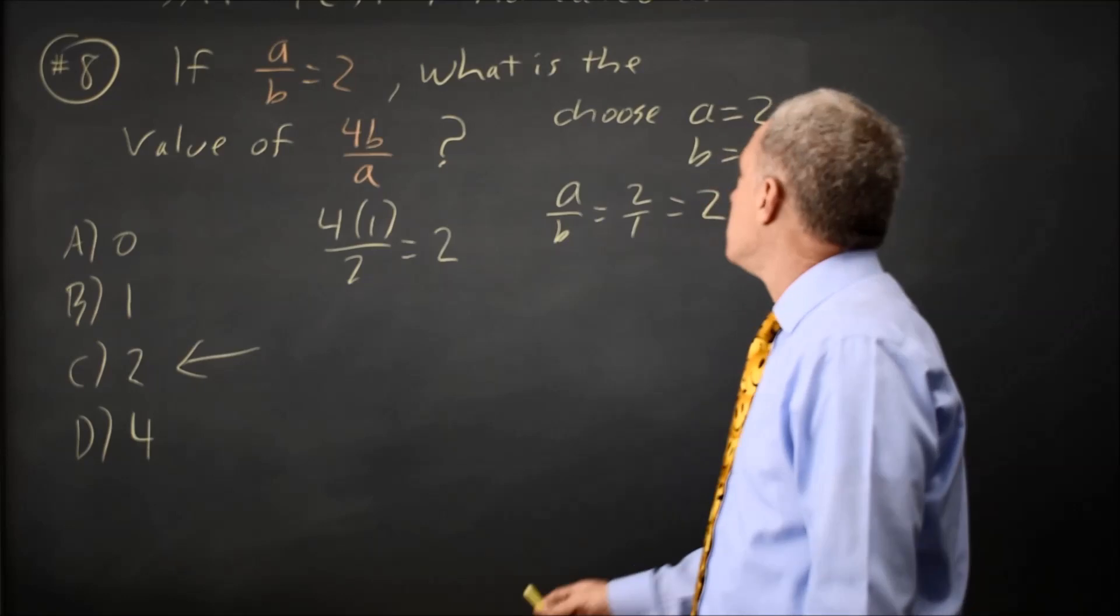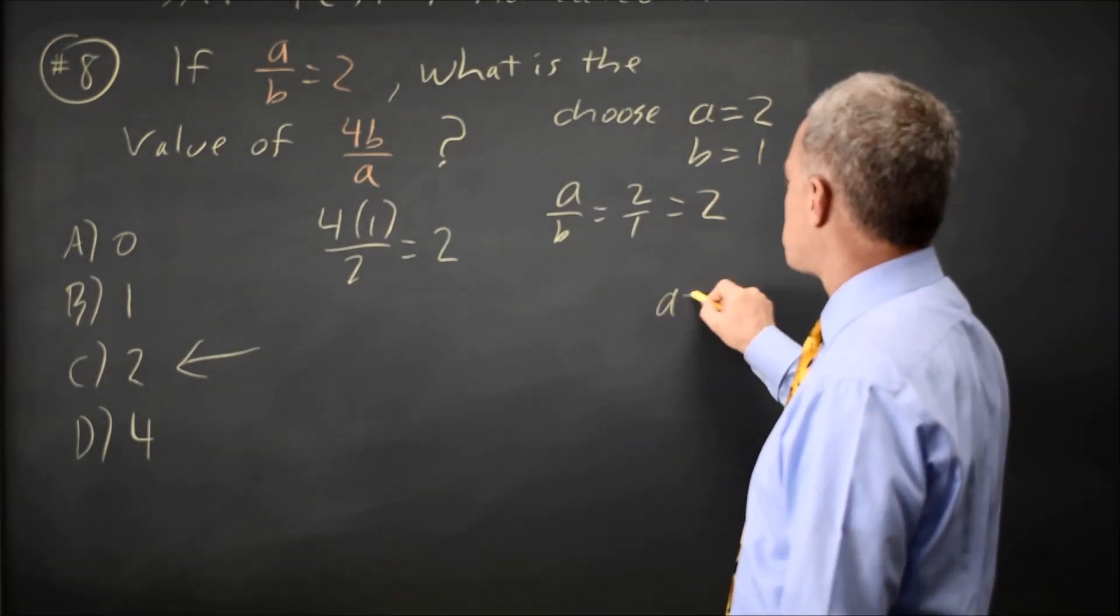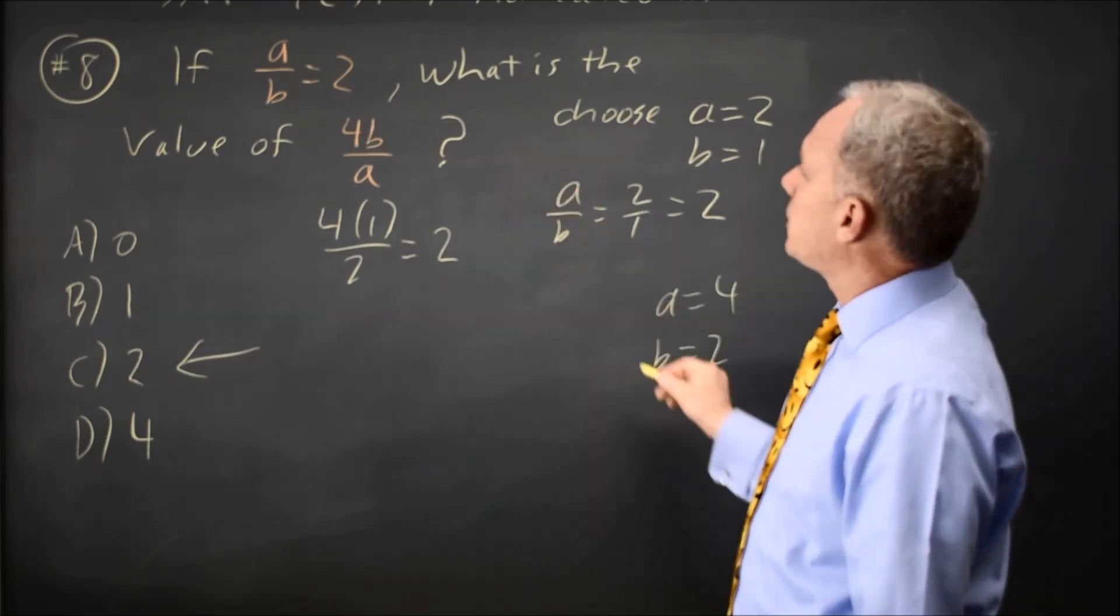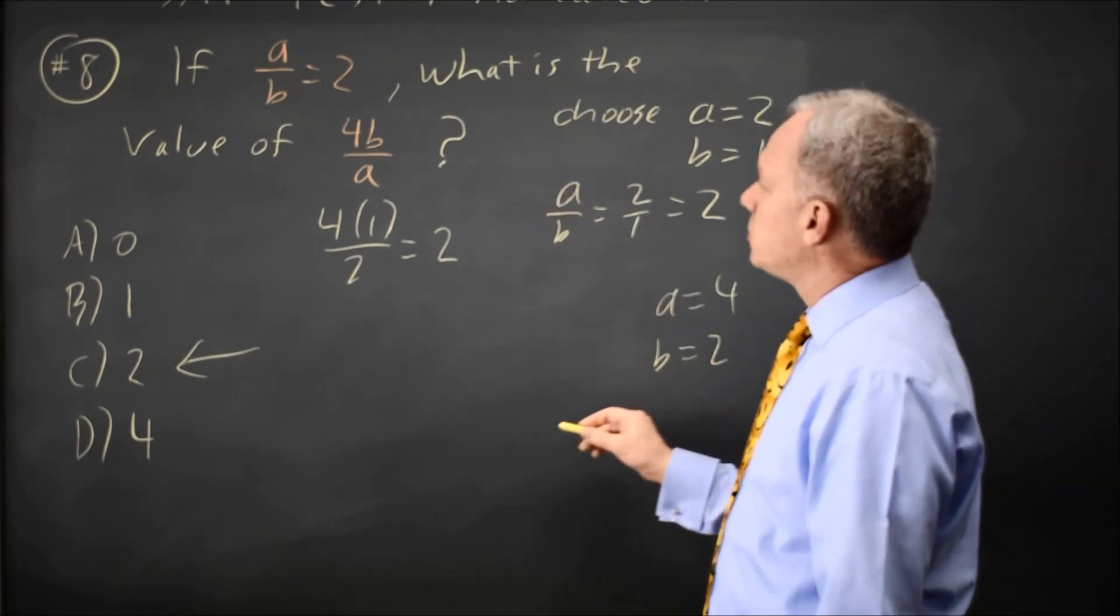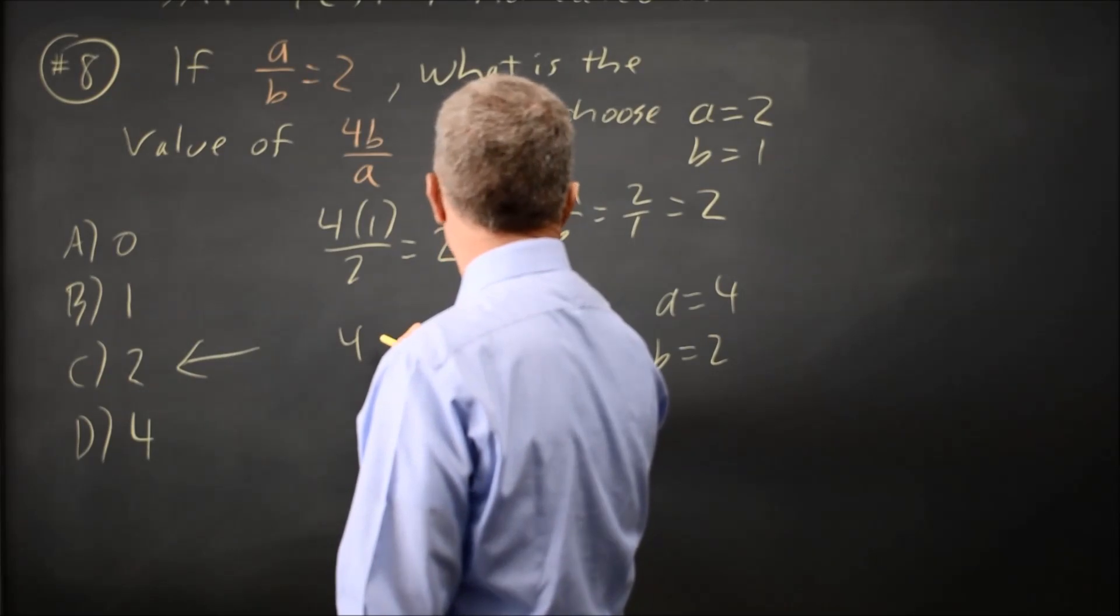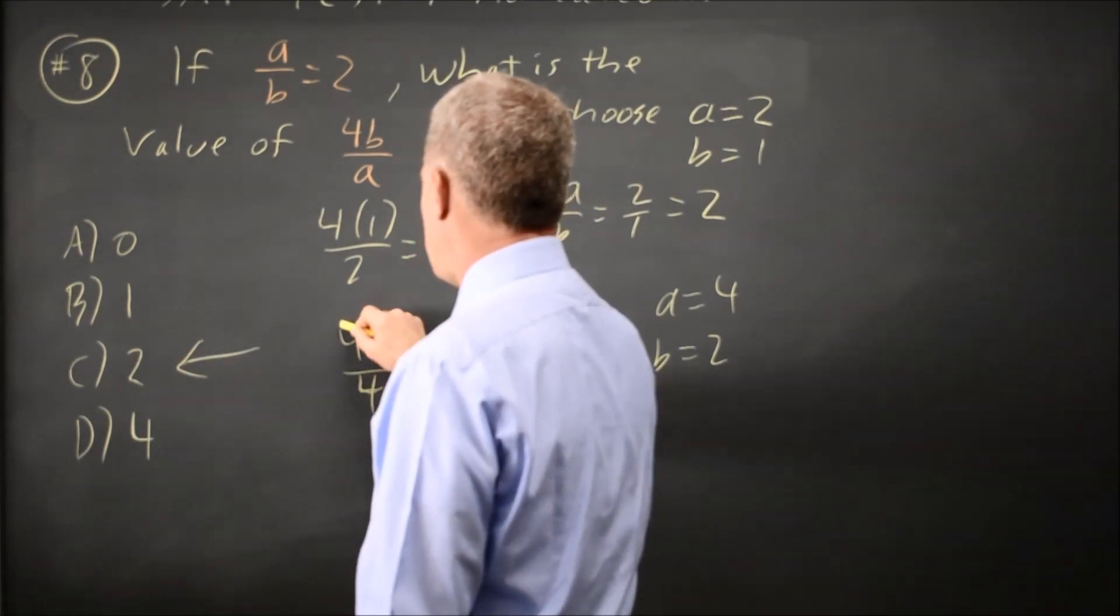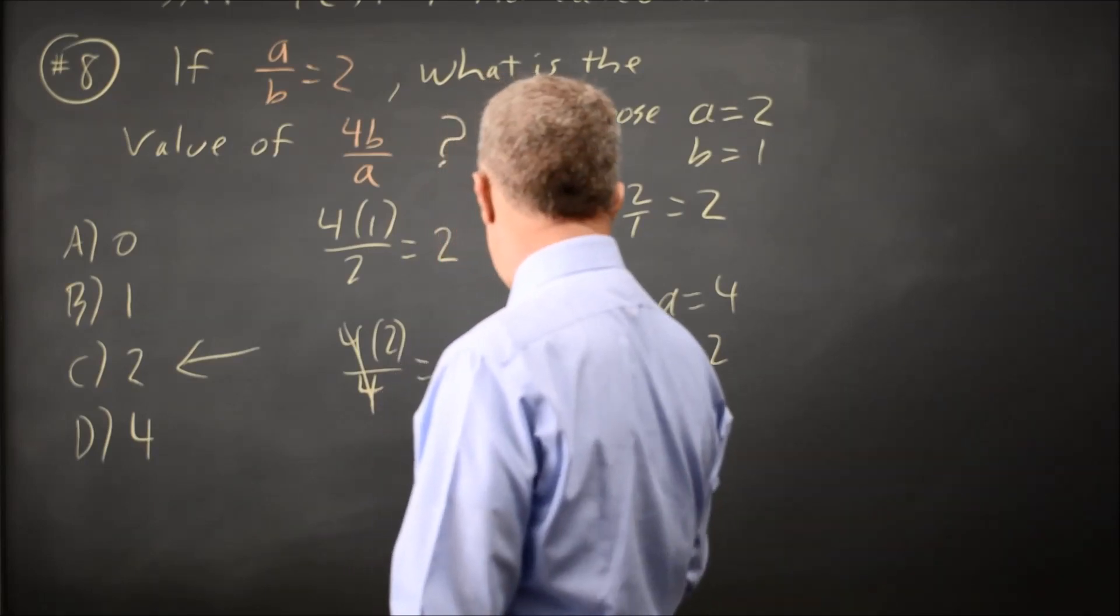So if I had chosen A equals four, B equals two, then A over B is four over two, which is two, and four B over A, four times two over A, which is four. And four over four is one, so that's again two.